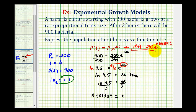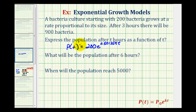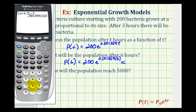To find the population after six hours we find p of six by substituting six for t. So p of six equals 200 times e raised to the power of 0.501359 times six. Using the calculator and rounding to the nearest bacterium, this gives approximately 4,050 bacteria.